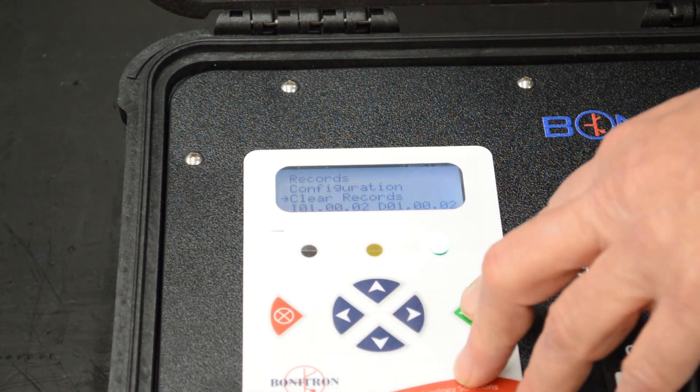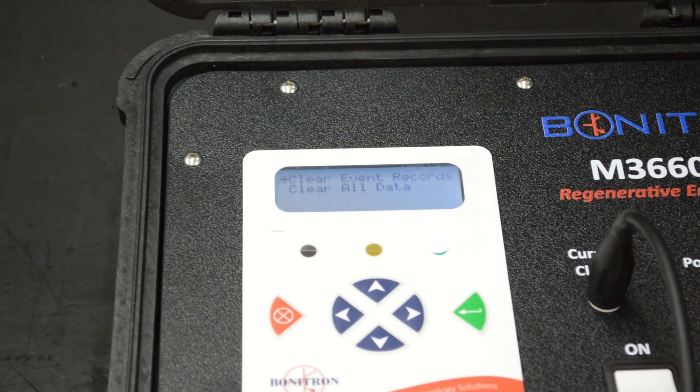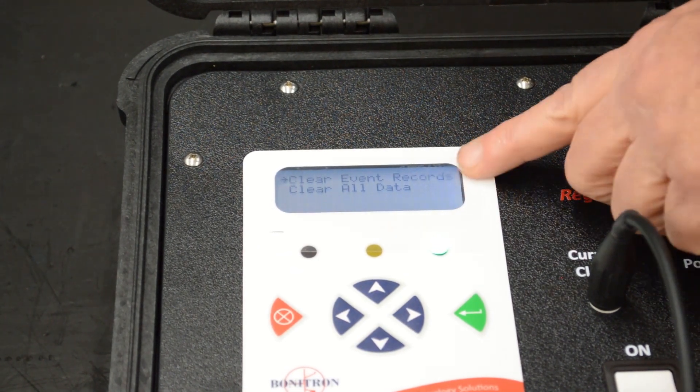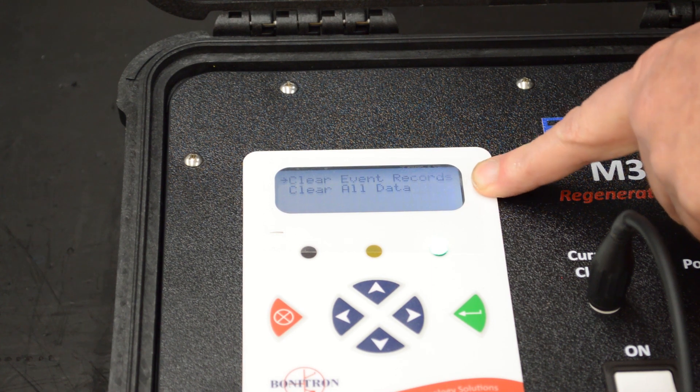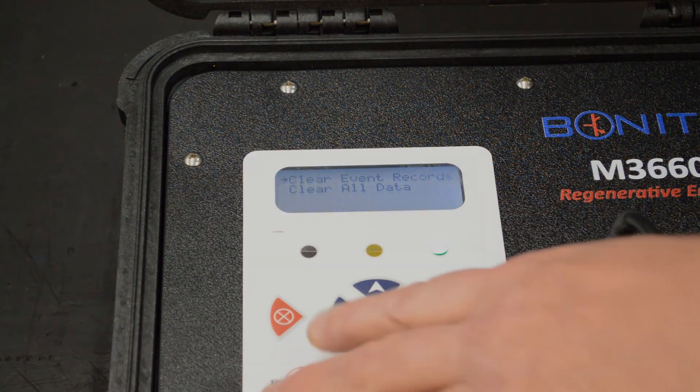And we move to the clear records menu, and that's pretty much self-explanatory. It will clear a single event record or it will clear out all the data from the monitor, and you can start all over again.